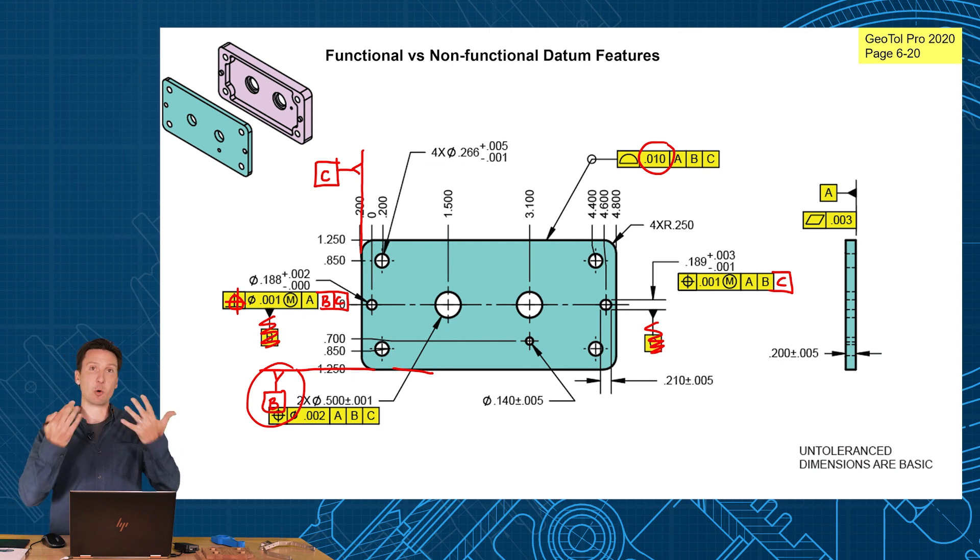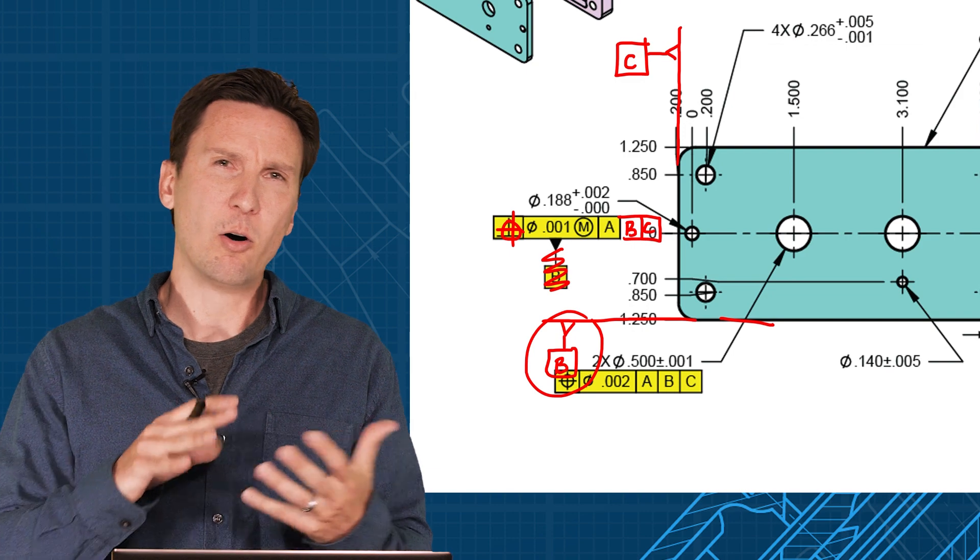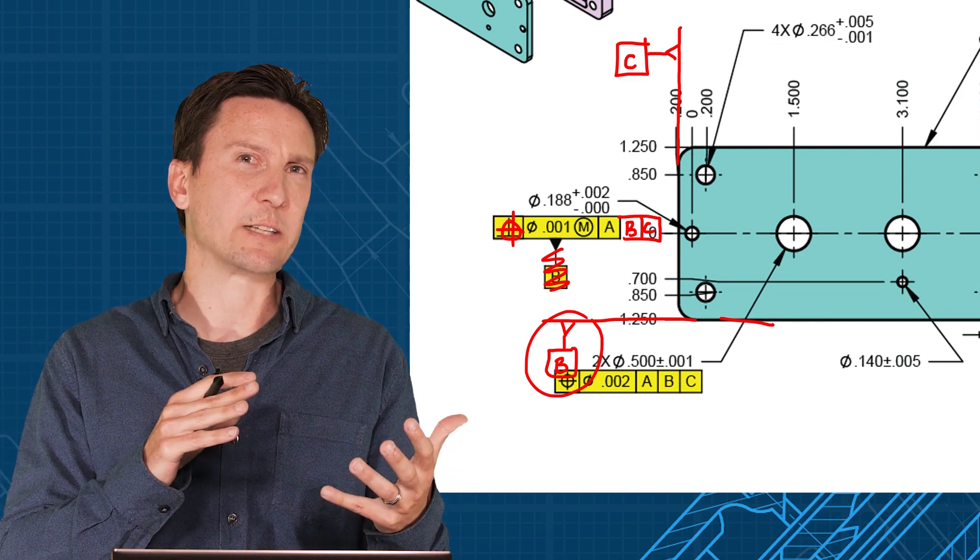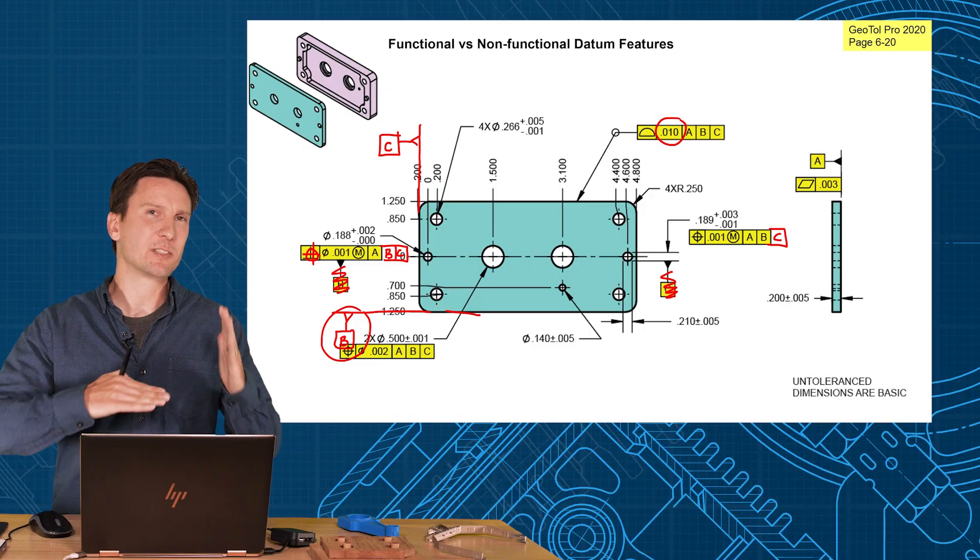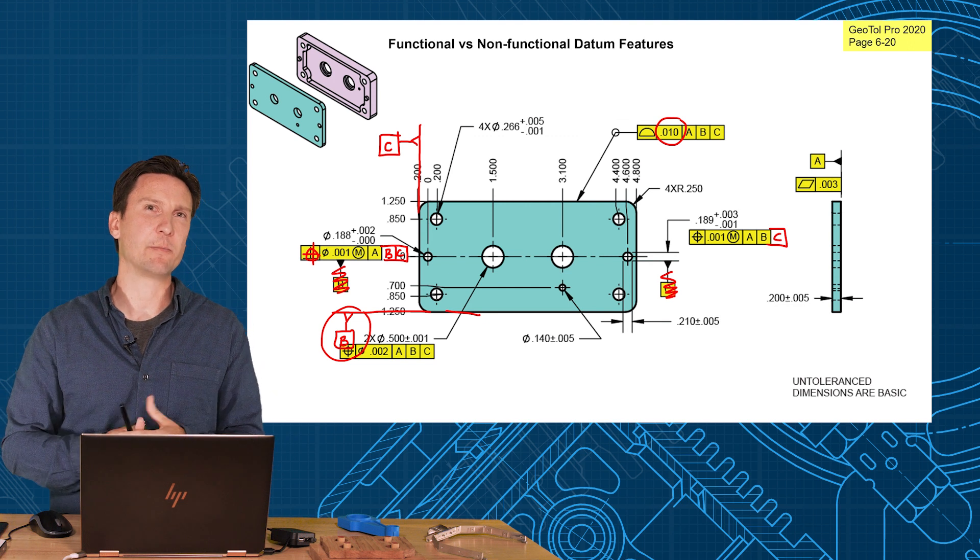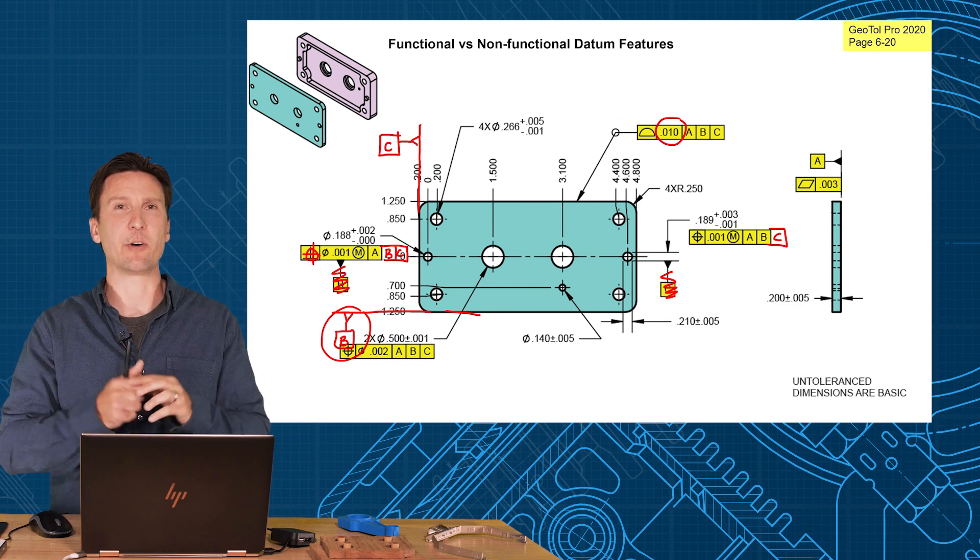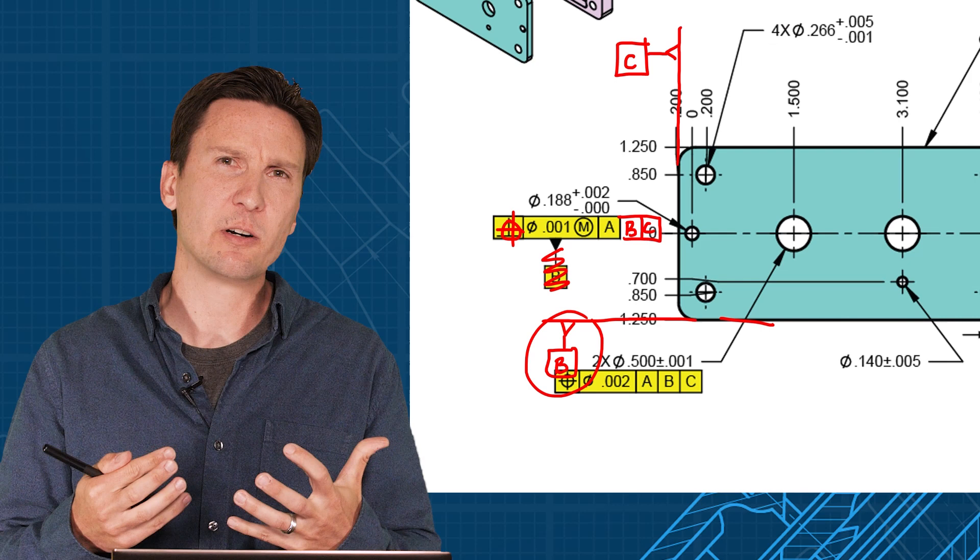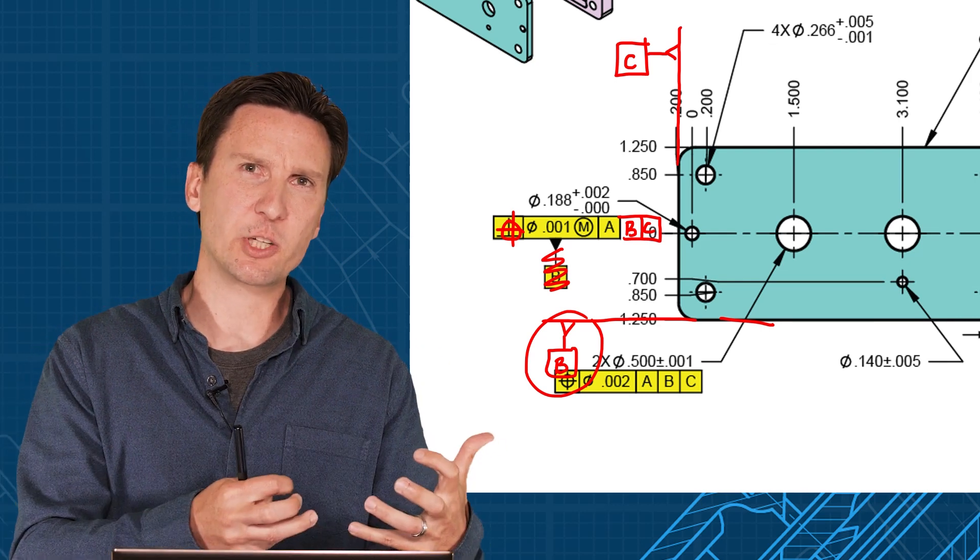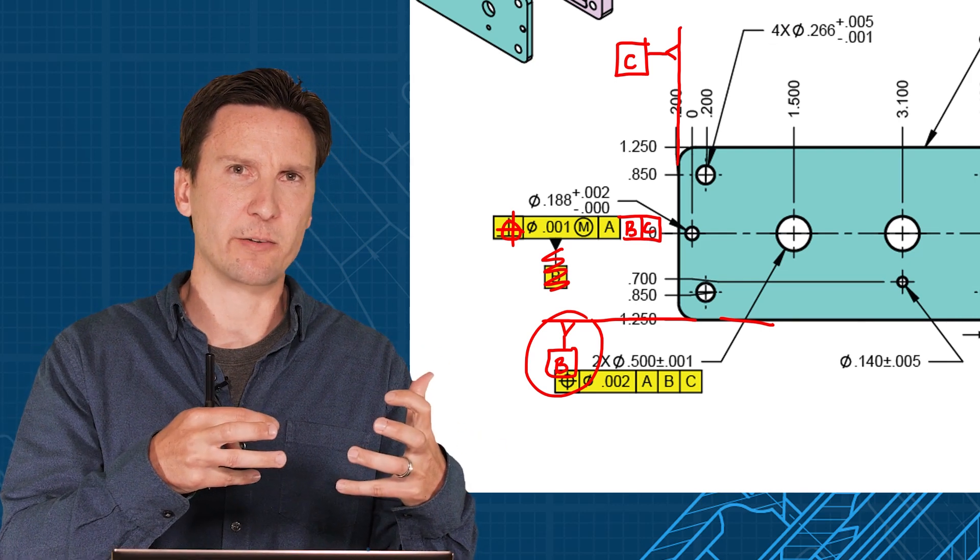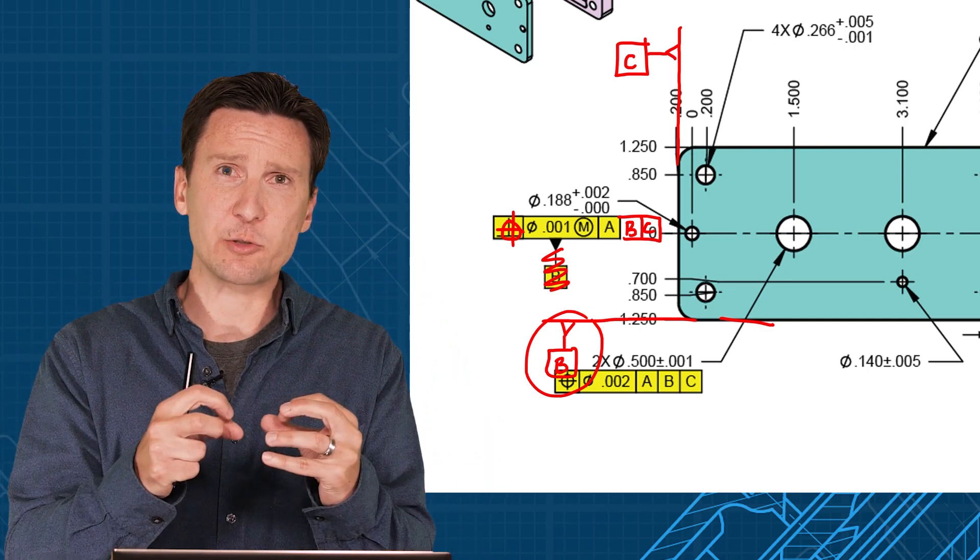So you've made it more difficult to manufacture because you made a non-functional surface, this bottom edge here, important just because you called it as a datum feature. Also you've given less manufacturing flexibility because now manufacturing is sometimes forced into your datum reference frame you've selected because you thought it was easy to manufacture. So what I tell design engineers is try to stick to your guns - how does the part fit, how does it function, and select your datum features based on that. And then you want to relate all your features to that.